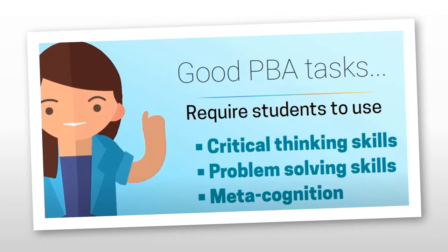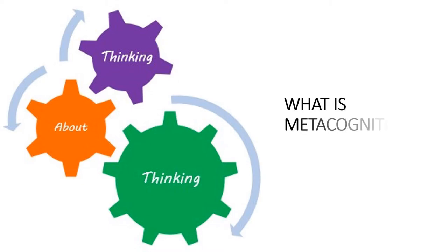A good performance-based task requires students to use critical thinking skills, problem-solving skills, and metacognition. Critical thinking is the capacity to look at aspects from a critical perspective — arguing, debating, discussing, presenting different ideas and views. Problem-solving is the capacity to give a solution to a concrete and significant problem. To do that, students need to develop their metacognition strategies. Metacognition is best defined as thinking about thinking — helping students reflect on how they learn and think.